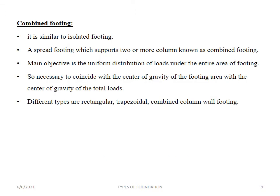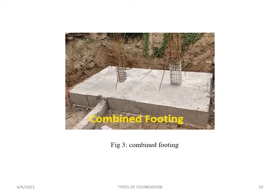The next type is combined footing, which is similar to isolated footing. In combined footing, a spread footing which supports two or more columns is known as combined footing. The main objective is to distribute the load uniformly to the entire area of the footing. The shape of combined footing can be rectangular, trapezoidal, or a combined column-wall footing.